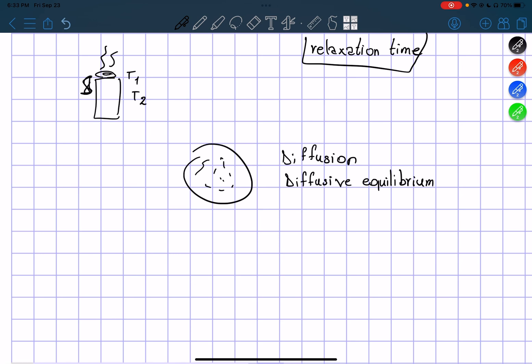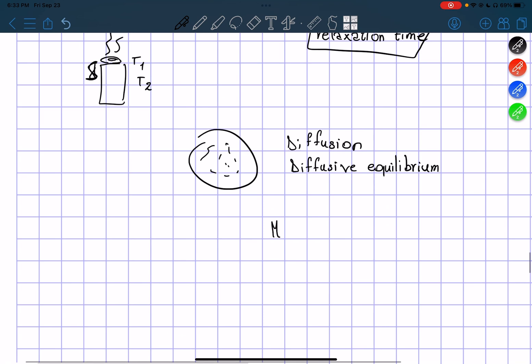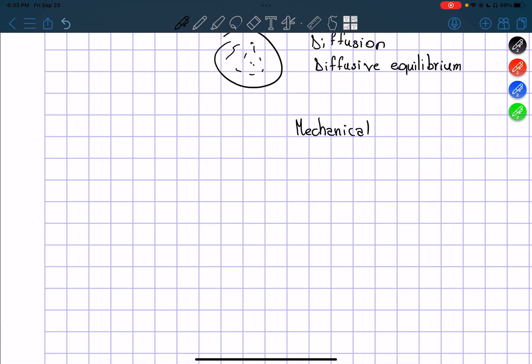But now there is even another equilibrium in addition to thermal and diffusion. There is one called mechanical. Mechanical is more of exchanging volume. If we're talking about the exchanged quantity and the type of equilibrium...